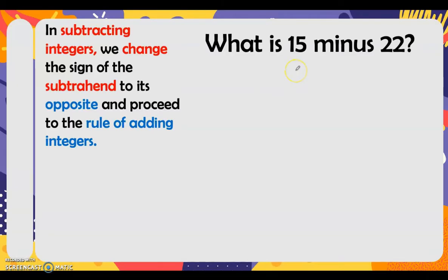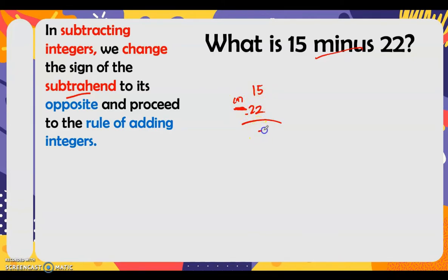What is 15 minus 22? In subtracting integers, the minuend is 15 and the subtrahend is 22. We change the sign of the subtrahend — its sign is positive, so we change that to negative — giving us 15 plus negative 22. We then subtract: 22 minus 15 is 7. Copy the sign of the greater absolute value — 22 has a greater absolute value and the sign of 22 is negative — so our answer is negative 7.